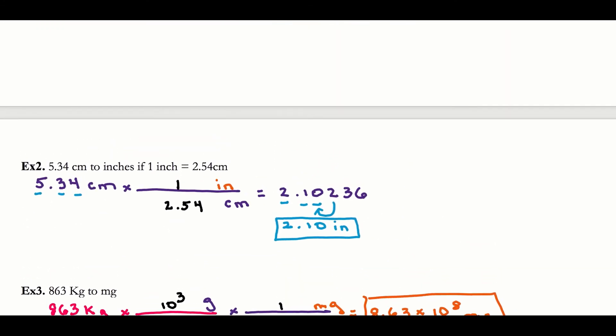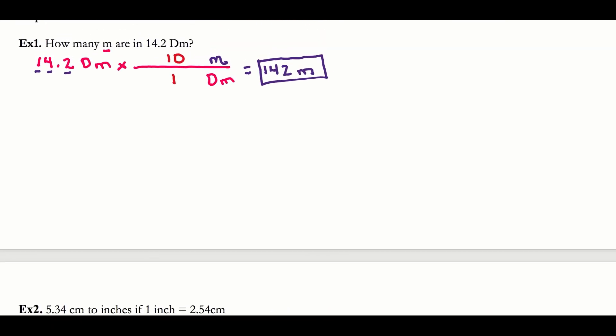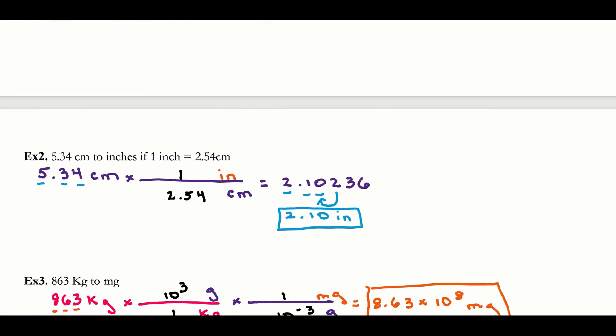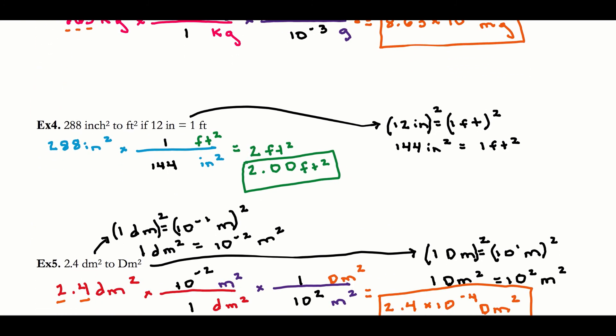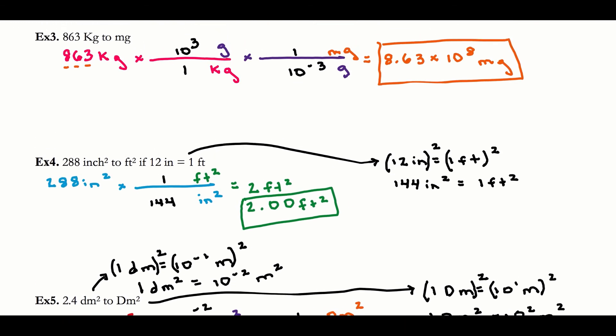Looking at all these examples — some might seem really easy, and you might think you don't need to show the setup. My answer is: no matter how easy it is, I need to see the setup. I give points for the setup, not just the answer. If you just put an answer with correct units, I can only give you one point. As you'll see later in stoichiometry, which uses these same conversion techniques, if you don't have the basics of how to set it up, it will be really hard. Show your work properly — that's the only way I'll give you credit on notes, worksheets, quizzes, and tests.